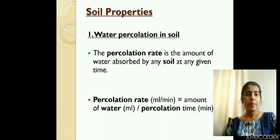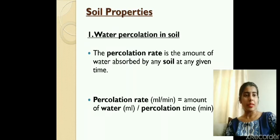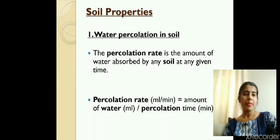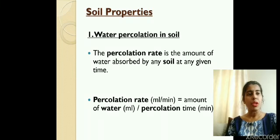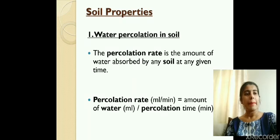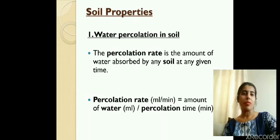The percolation rate is the amount of water absorbed by any soil at any given time. This rate is going to be different for different types of soil. It can be calculated using the formula: percolation rate (in mL/min) = amount of water (in mL) divided by percolation time (in minutes). The value can be calculated by putting these values into this formula.